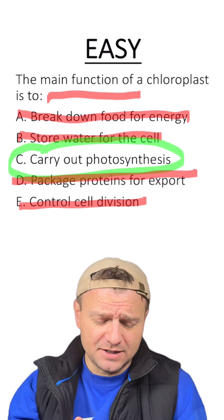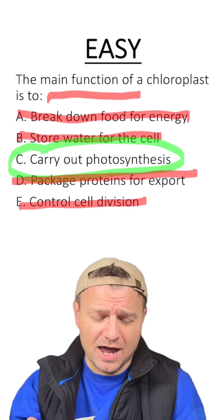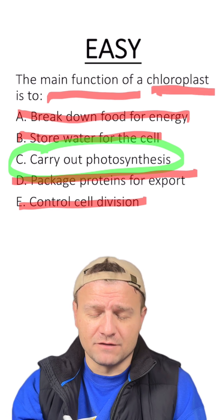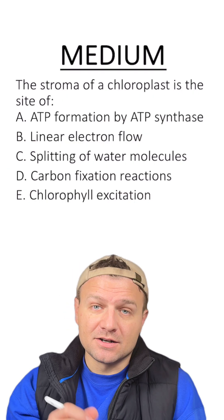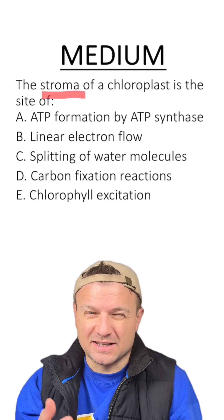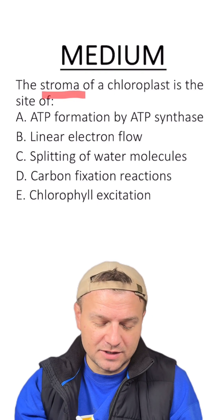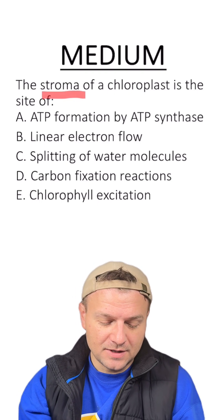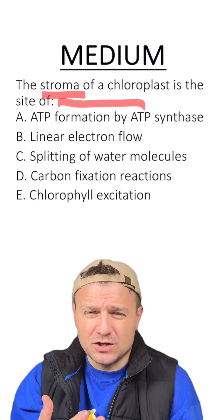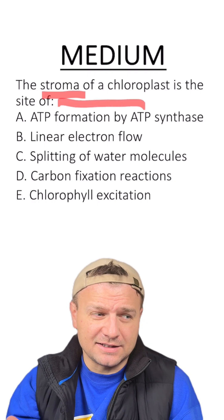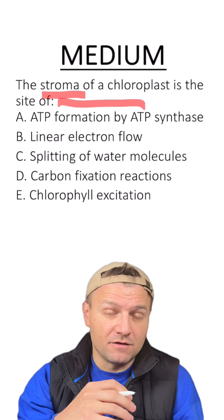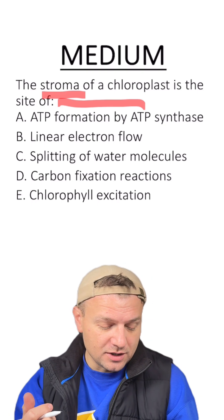The reason why this is an easy question is it's basically just asking if you've memorized the function of the chloroplast. Here's the medium question. The stroma of the chloroplast — that's like the inside liquid, like the cytoplasm of the chloroplast — is a site of blank. The question is basically asking have you memorized what occurs in the stroma versus the thylakoids?